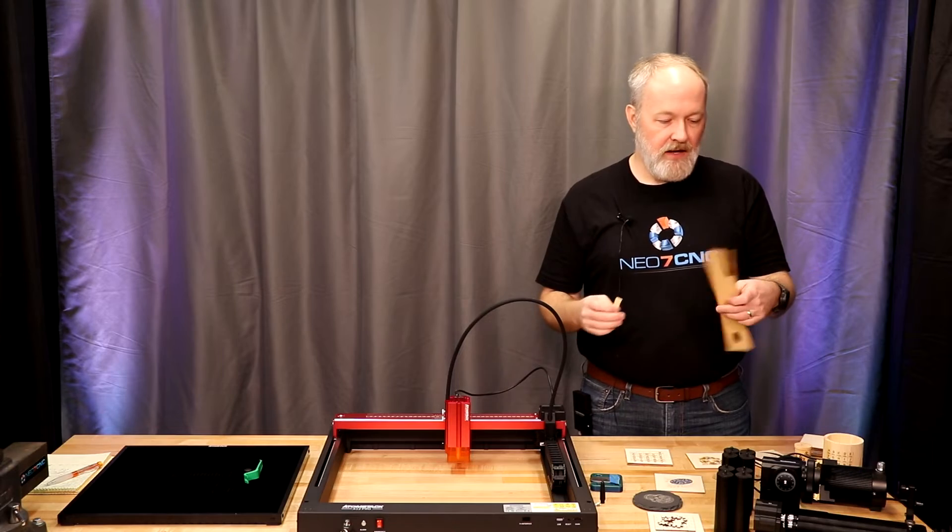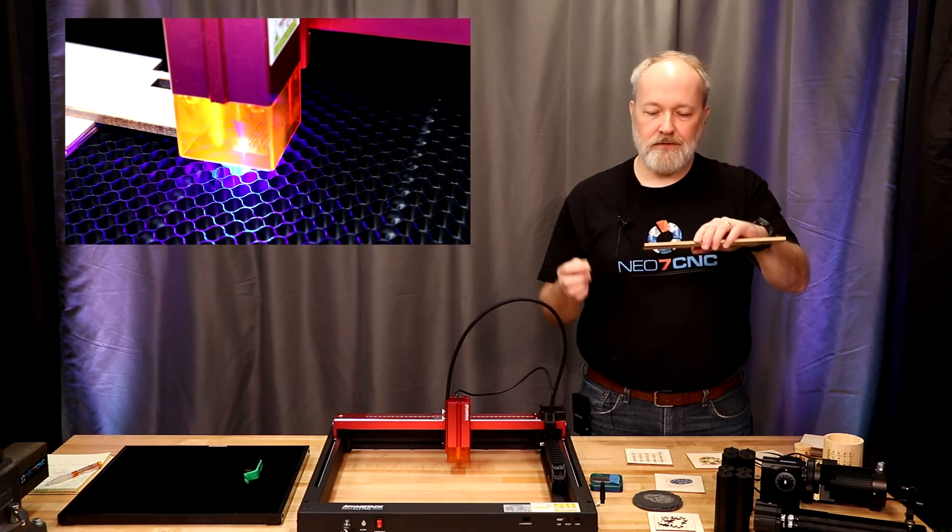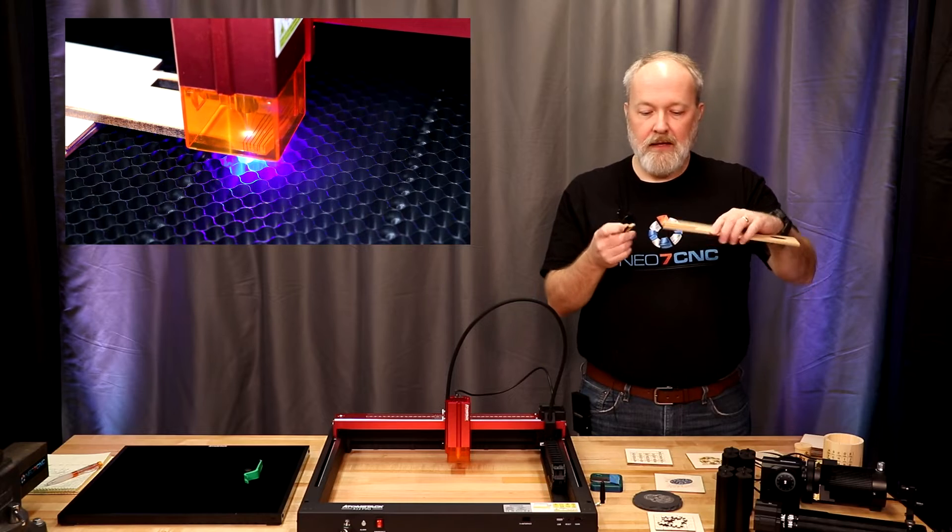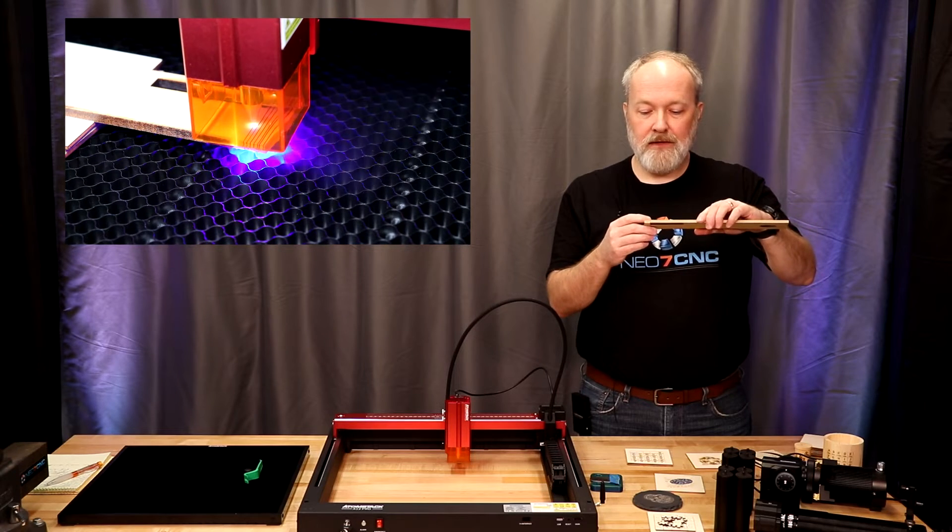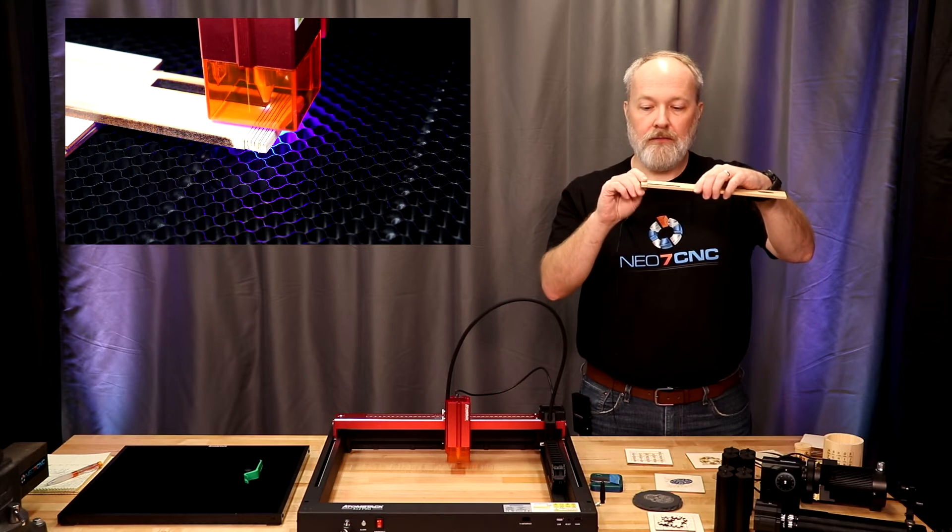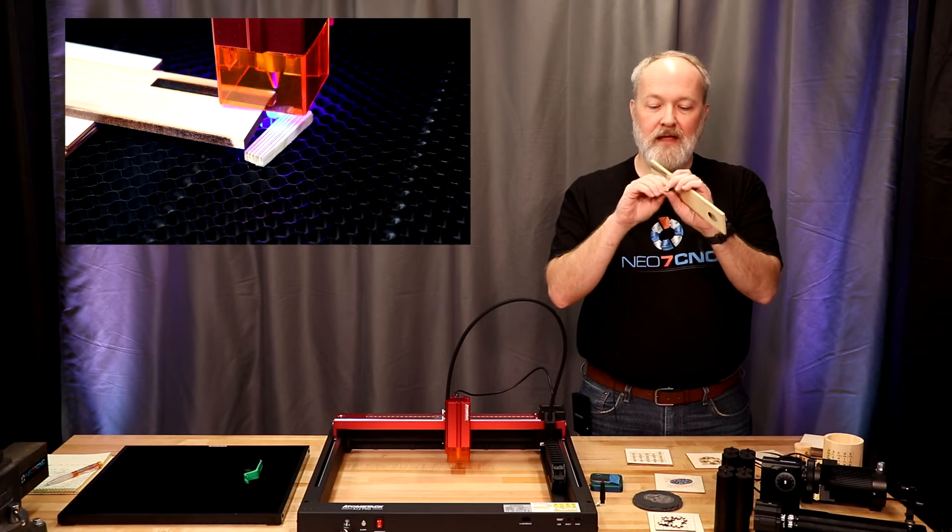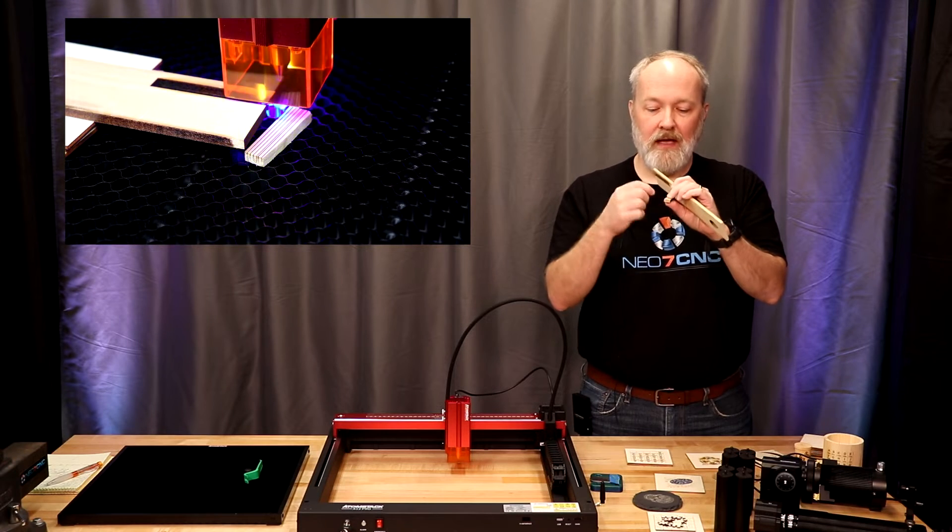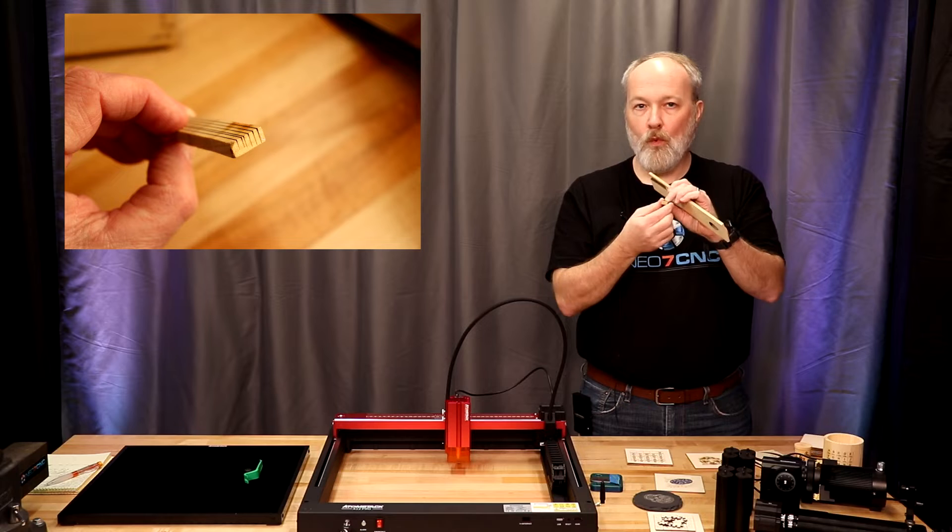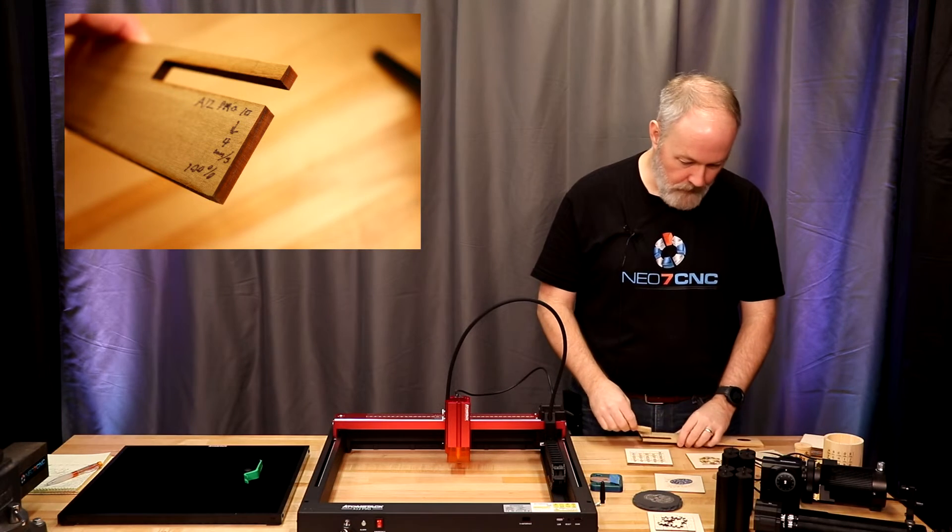Did a cut test. So this is a piece of quarter inch or 6.35 millimeters roughly poplar. And I started at 10 millimeters a second. And once I got to 4 millimeters a second at 100 percent power, the piece just dropped off. And you'll see in the shot how the cuts step down as I'm decrementing one millimeter per second from 10. And so that turned out really well.